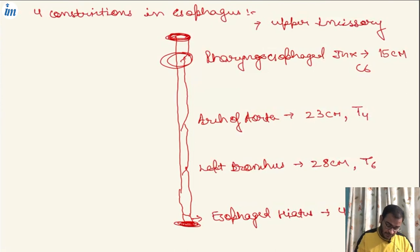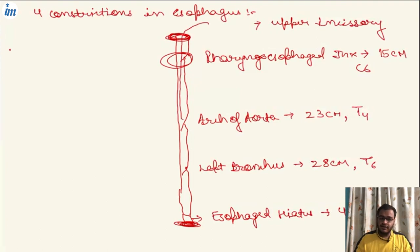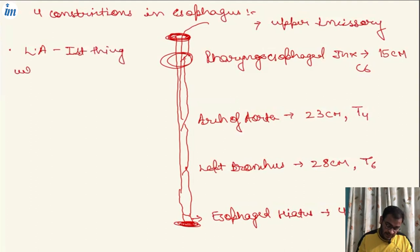Another question examiners ask is about transesophageal echocardiography. When the probe is inserted for the heart, the first thing we visualize is the left atrium.